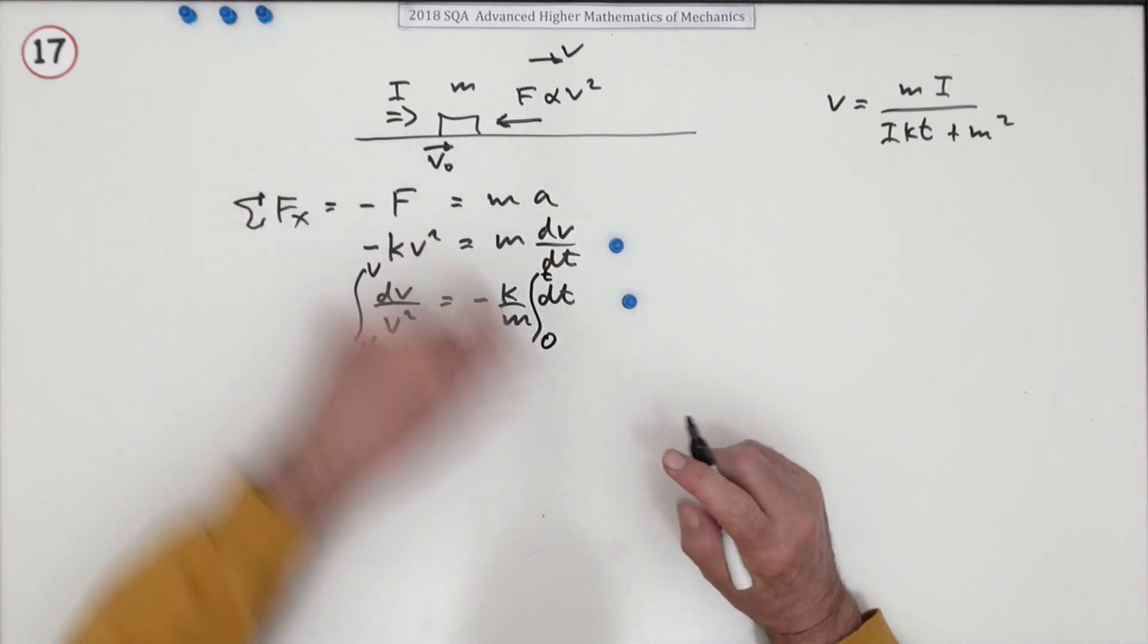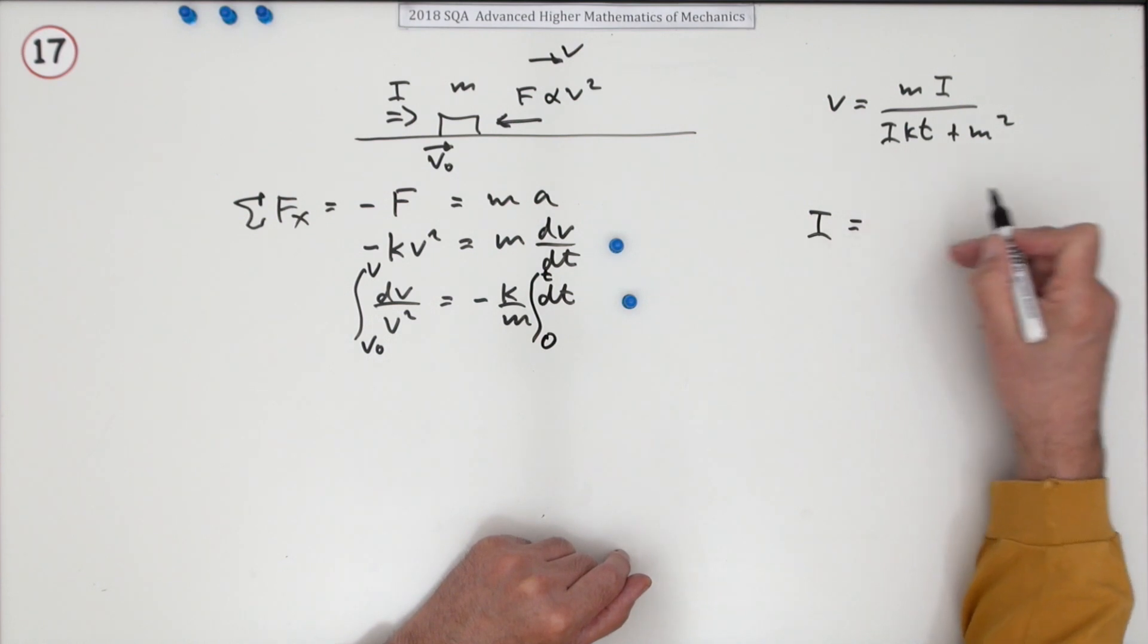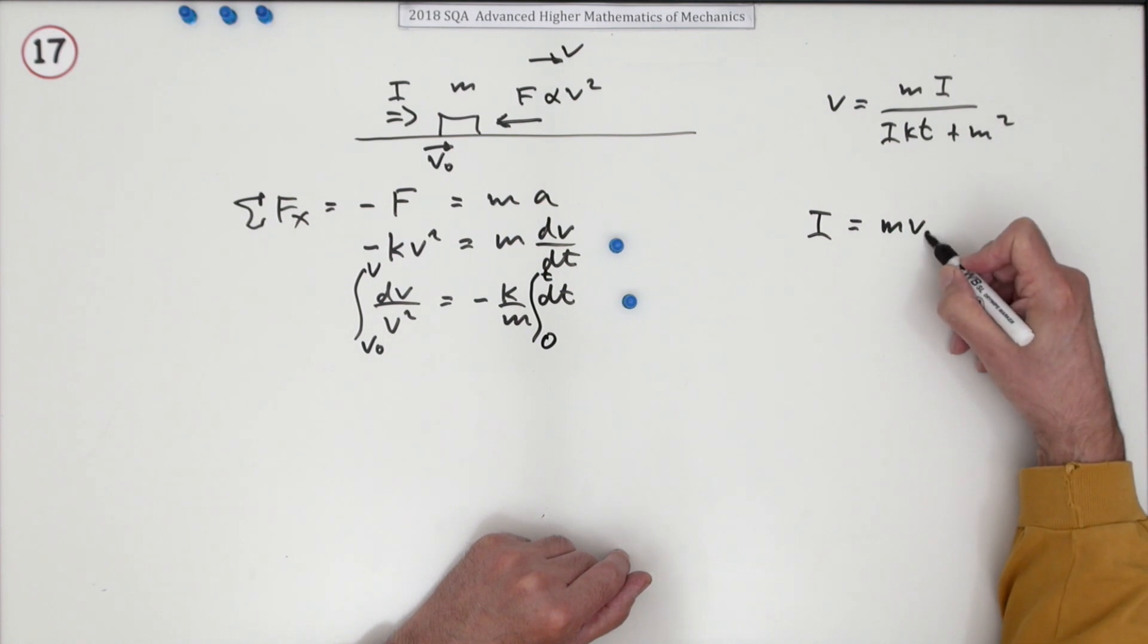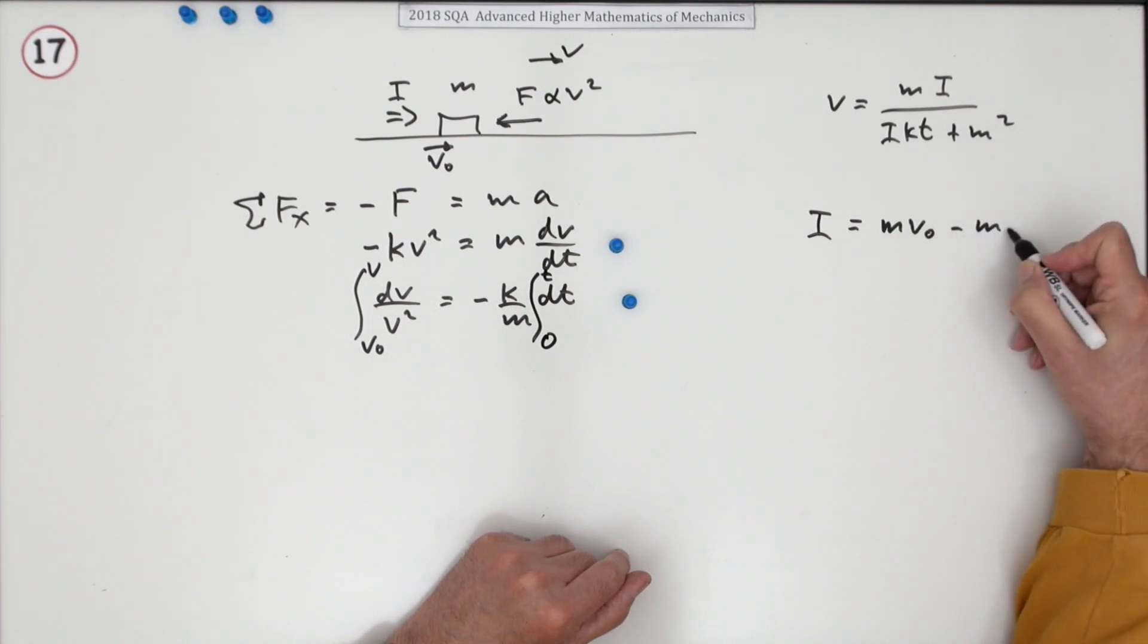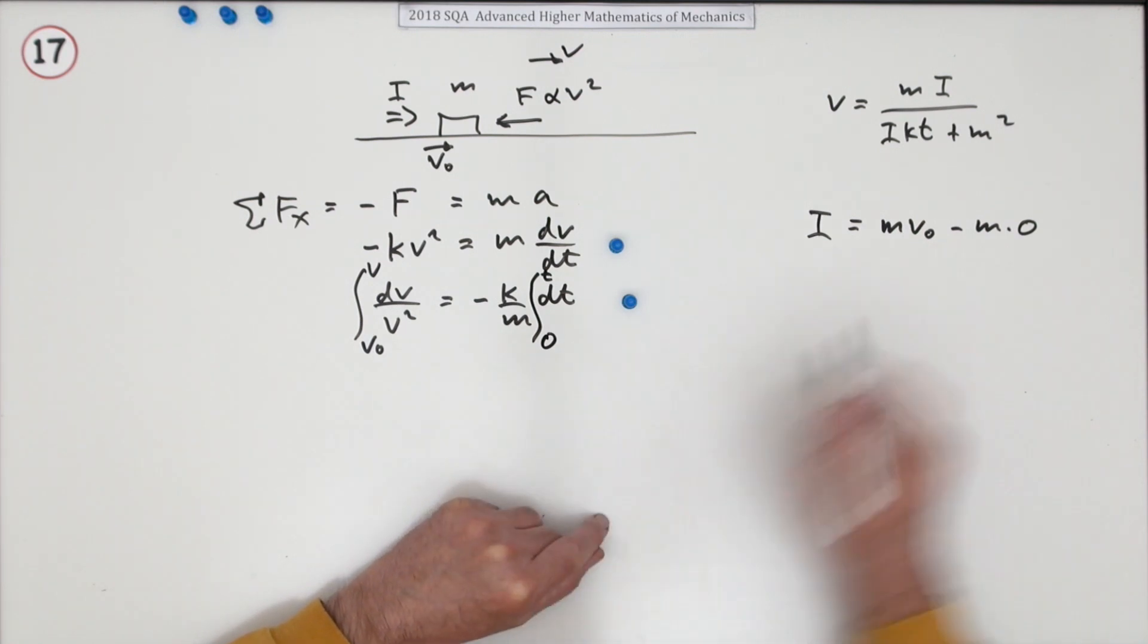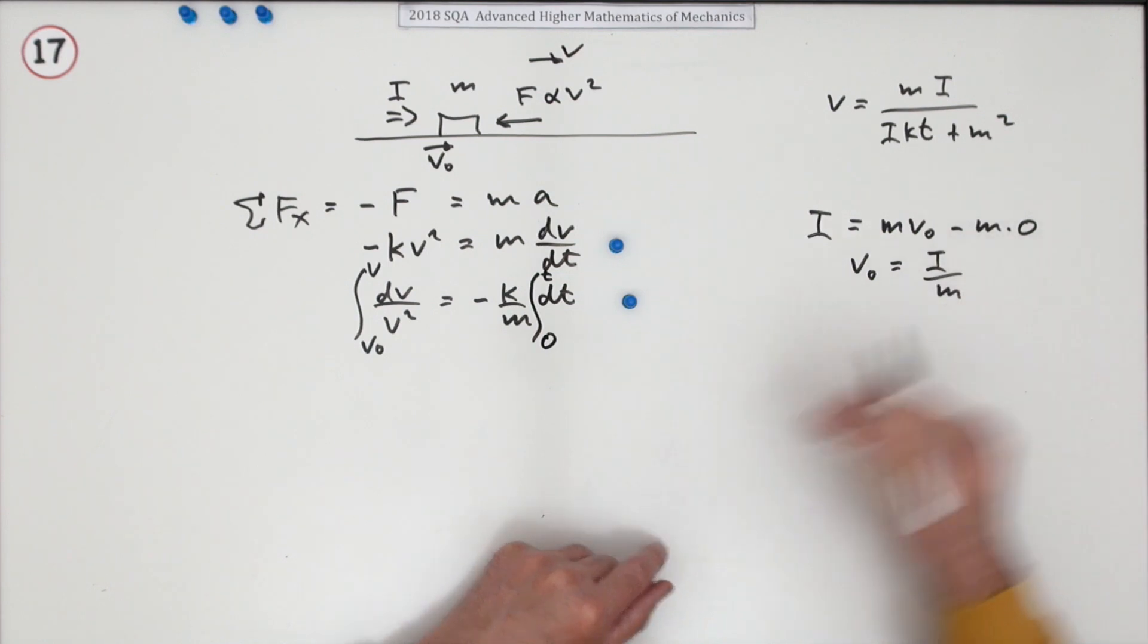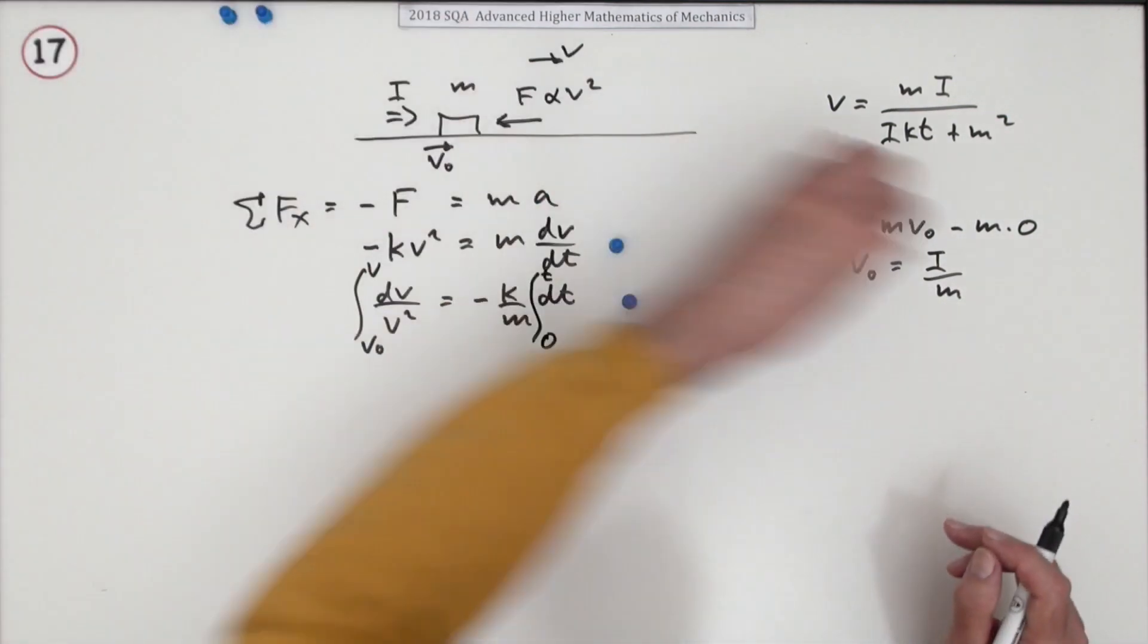You know what V0 is, because you know that the impulse equals the change in momentum. That will be M V0 minus M times 0, because it was starting at rest. So I know that V0 will be I upon M. So that's worth a mark.